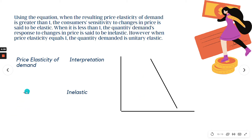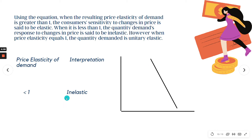For inelastic demand — when price elasticity is less than one, such as negative or zero-point-something — the slope of the demand curve is almost vertical. This means there is a relatively large change in price but a small change in quantity demanded. This is how the demand curve looks when price elasticity of demand is inelastic.